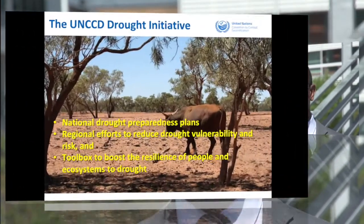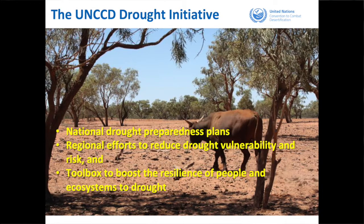The UNCCD drought initiative is another flagship activity we have worked on for the last two years. It has three pillars. First, we support countries to develop national drought plans based on risk reduction principles, to be prepared before drought strikes. Second, we help countries learn from each other by facilitating regional efforts and exchange of learning and practices among countries.